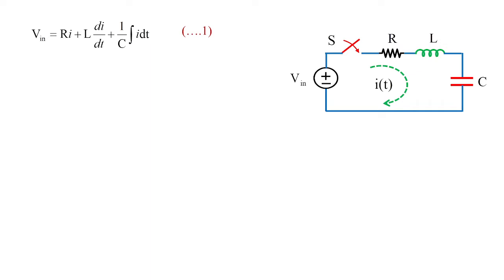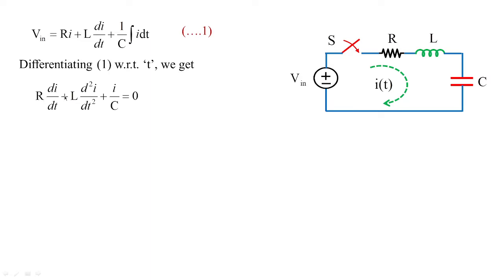I'm going to differentiate equation 1 with respect to t. Differentiating gives R·di/dt plus L·d²i/dt² plus i/C = 0. The right-hand side is zero because Vin is a DC input voltage and the derivative of a constant is zero. Now making small changes: dividing through by L, this becomes d²i/dt² + (R/L)·di/dt + i/(LC) = 0.